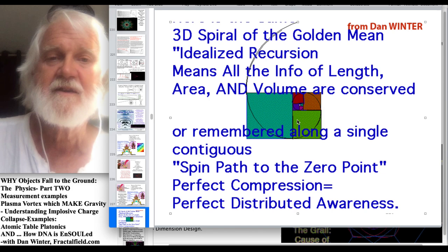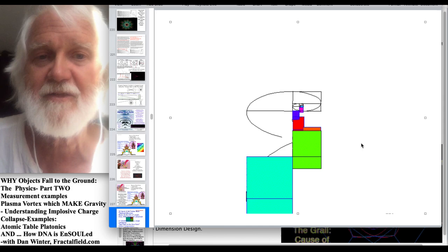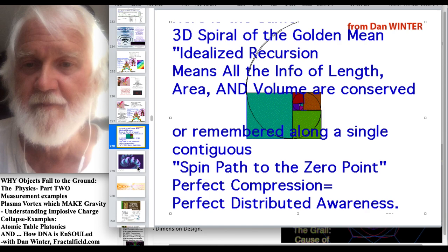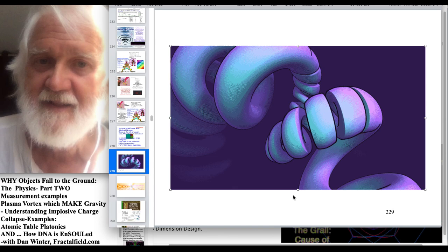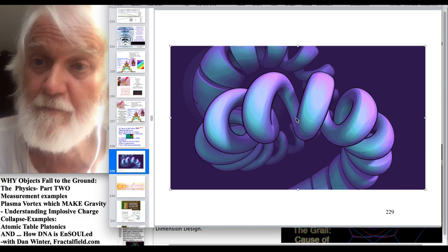Let's see if we have an animation here. I think it's supposed to play. So this is point length, area, and volume are conserved along a single contiguous pathway. And the braid within the braid that braids. This all is at the article on implosion and DNA, which is golden mean dot info slash DNA manifesto. And all these graphics and animations are there.